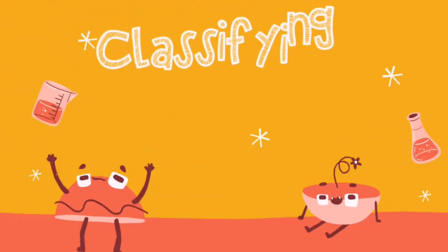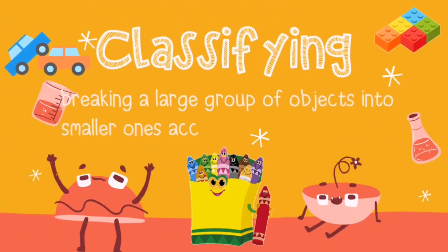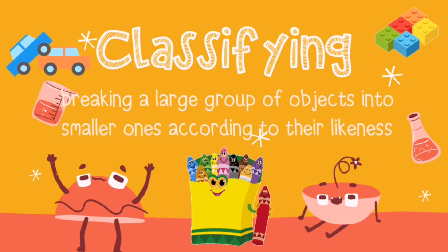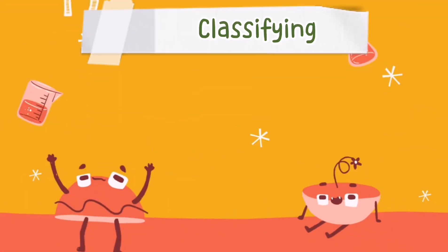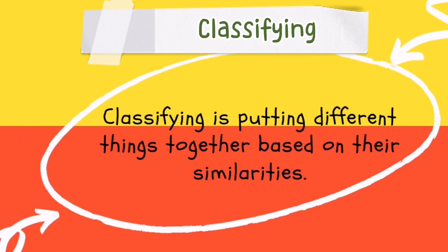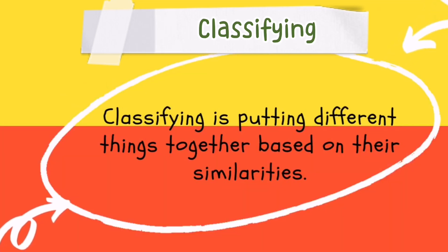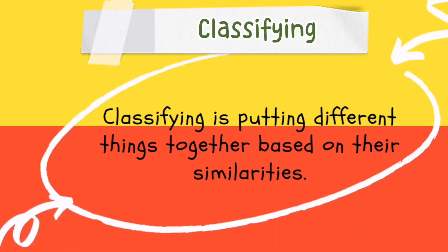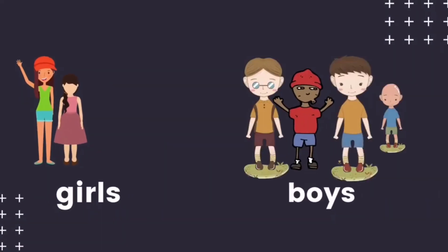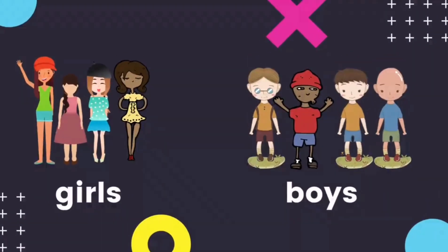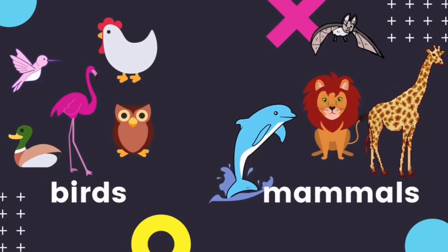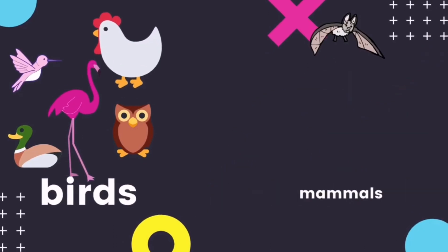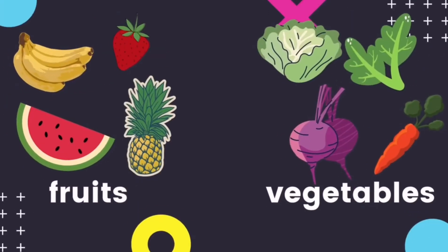The next science process skill is classifying. This skill is breaking a large group of objects into smaller ones according to their likeness. When we classify, we put different things together based on their similarities. Arranging things according to their uses and characteristics helps prevent confusion. For example, classifying the group of girls to the group of boys, sorting the bird group to the mammal group, and grouping fruits from the vegetables.